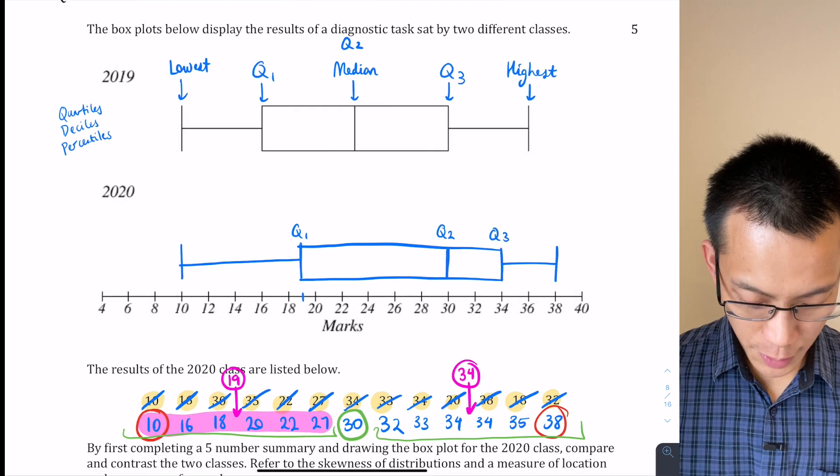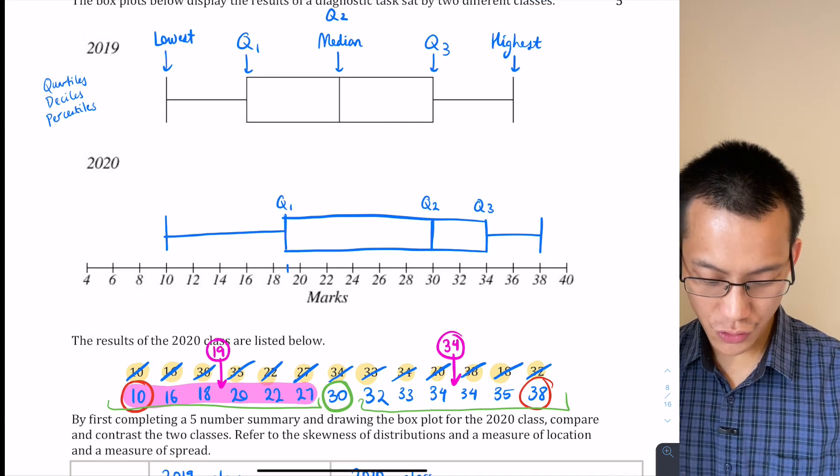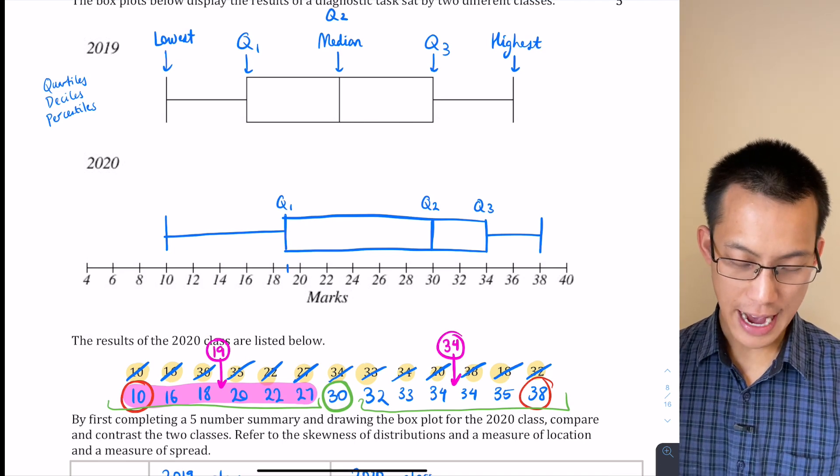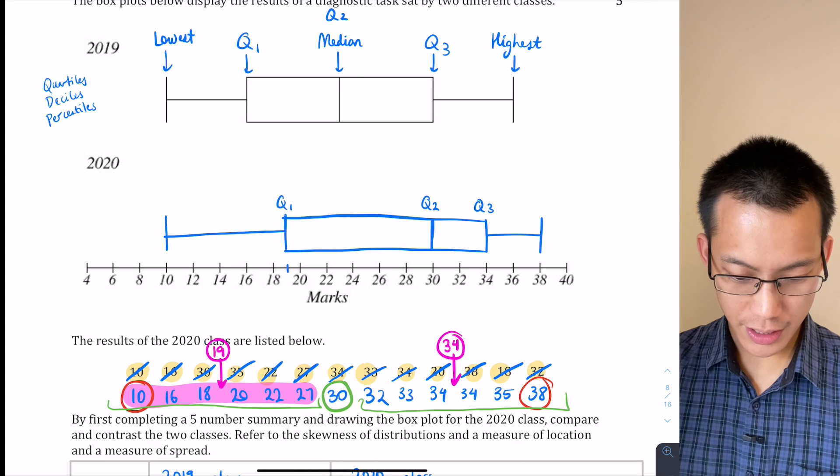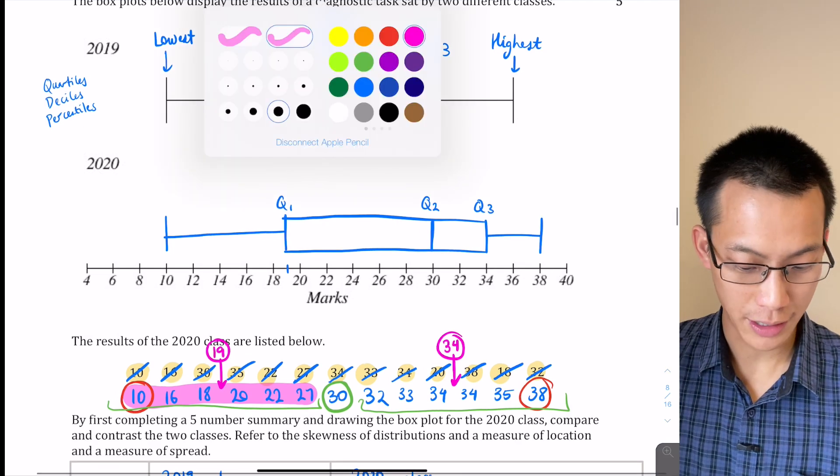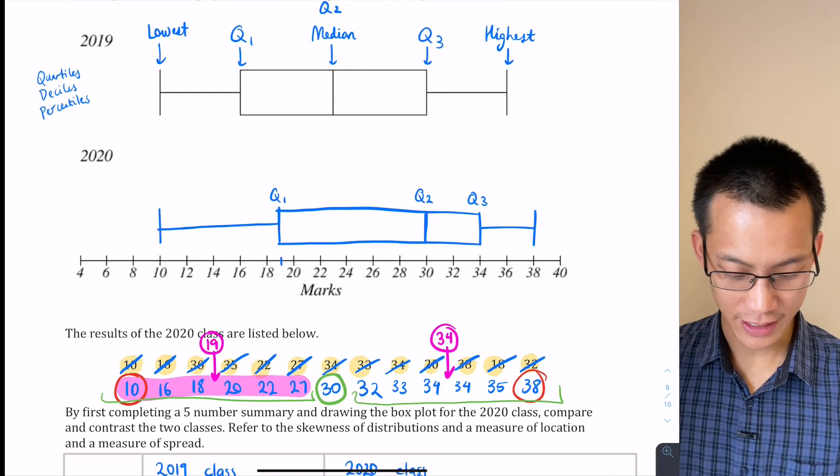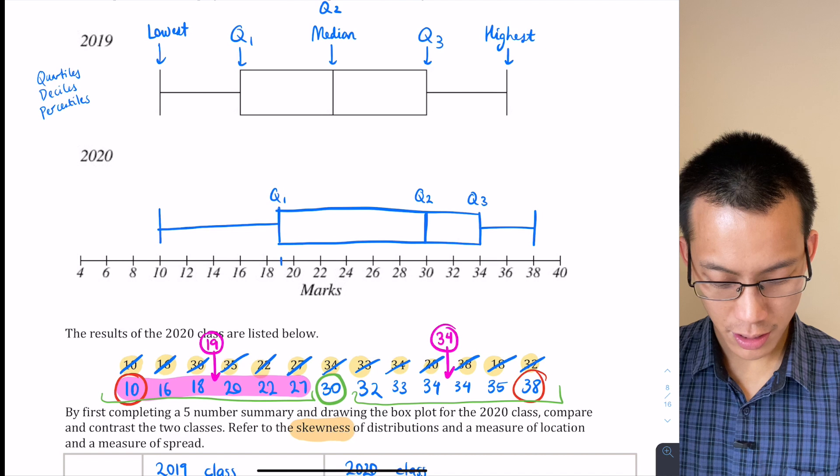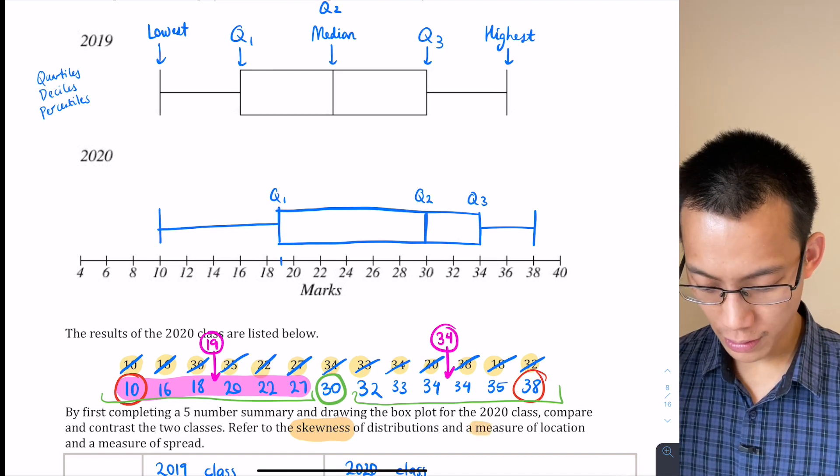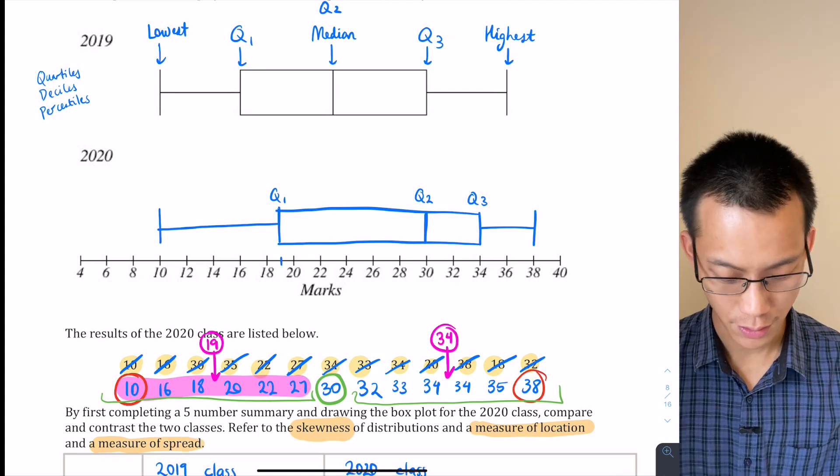And now we're supposed to use that, you can see down the bottom, to compare and contrast the two classes. Now this is really important: the question says refer to, and then it names a few things which, if you want to get full marks on this, you want to identify fairly deliberately. It says the skewness of the distributions, the measure of location, and then the measure of spread. So let's talk about each one of those in turn.